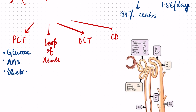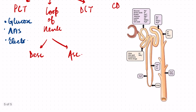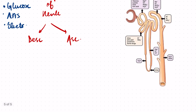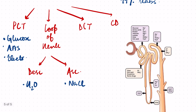In the loop of Henle there is minimum reabsorption. We divide the loop of Henle into the descending limb and ascending limb. The descending limb is permeable to water, so water is reabsorbed. The ascending limb is impermeable to water but permeable to solutes, so salts like NaCl are reabsorbed. But minimum reabsorption occurs at the level of the loop of Henle.